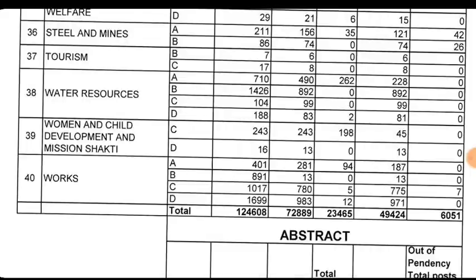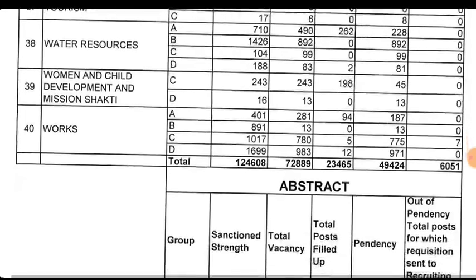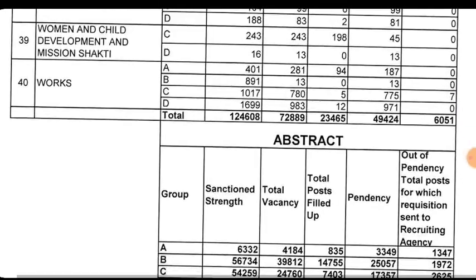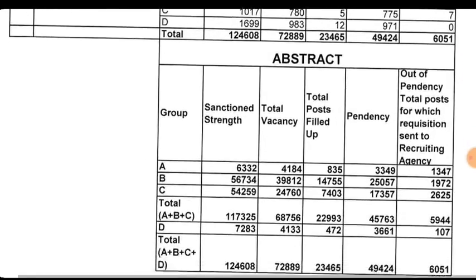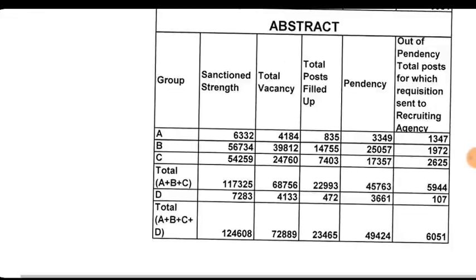The total vacancy equation gives us 7 total vacancies across departments, with approximately 6,051 posts. There are 611 posts in a specific equation.